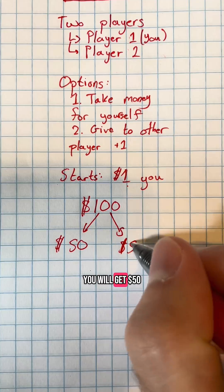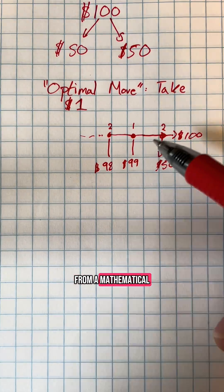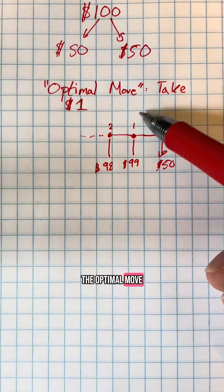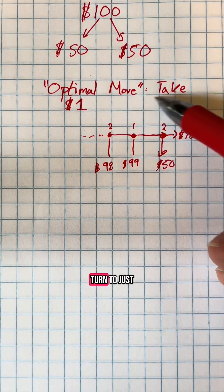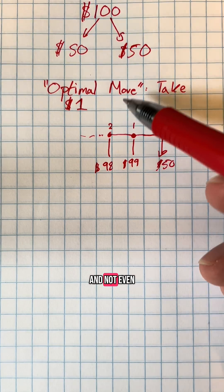From a mathematical game theory perspective, the optimal move is for you on your first turn to just take the one dollar and not even play the game out.